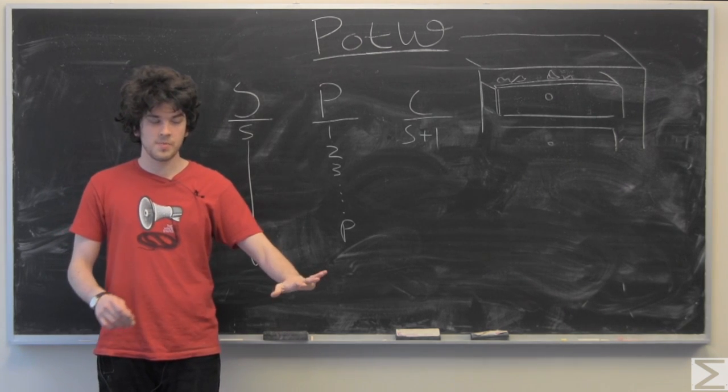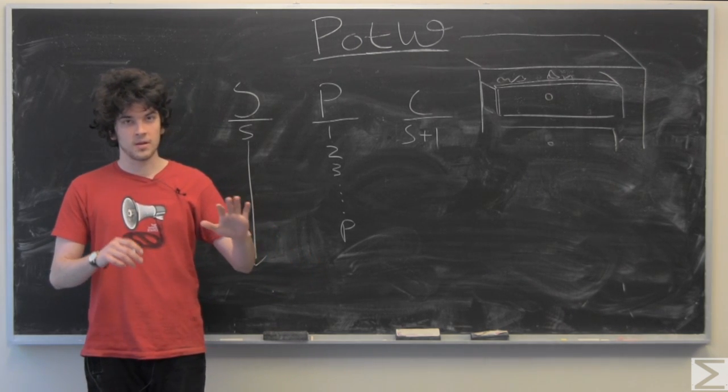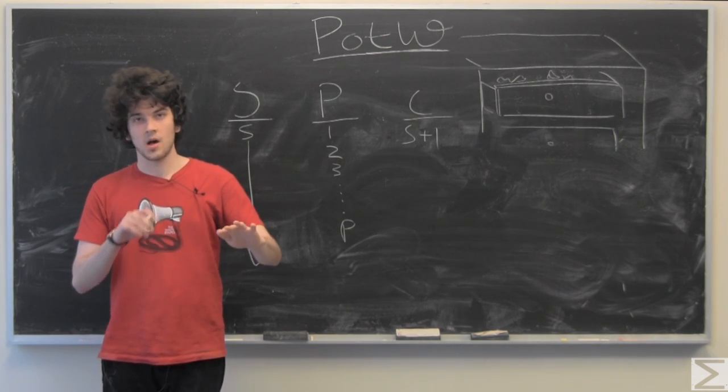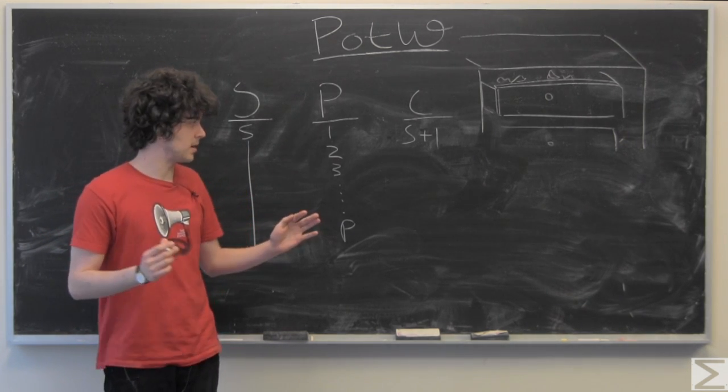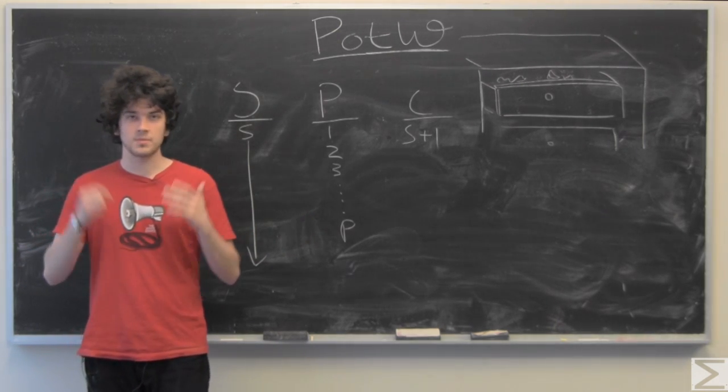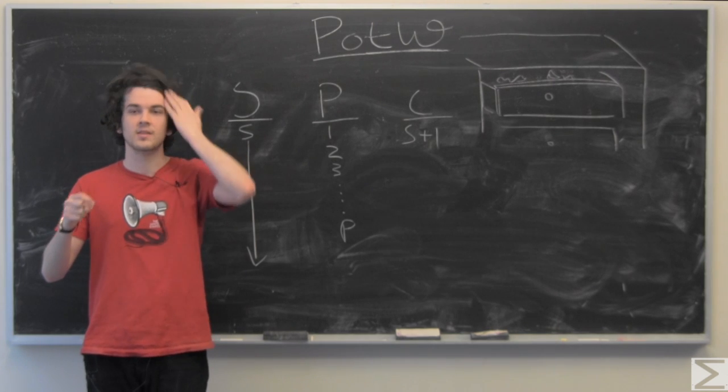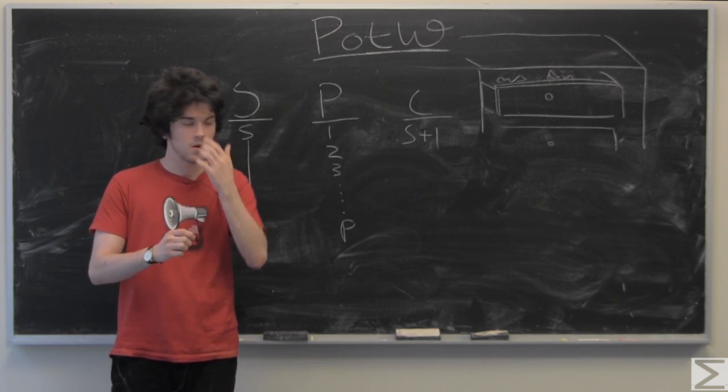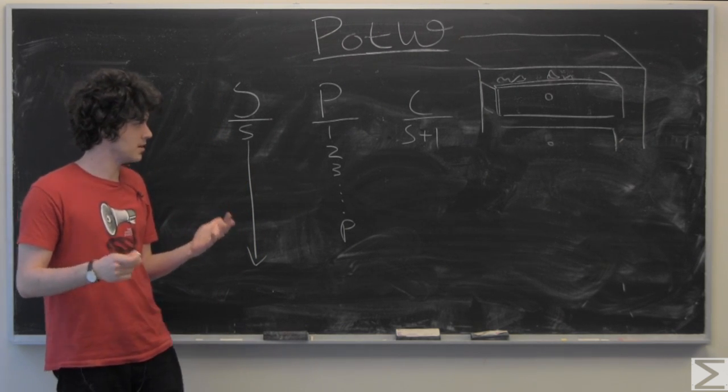We're going to ignore the two socks that are in our matching pair for now. So we have s plus 1 minus 2, which is s minus 1, and in order to get back up to that magic number to guarantee that there's a pair outside of that first pair that we chose, we're going to add 2 again.